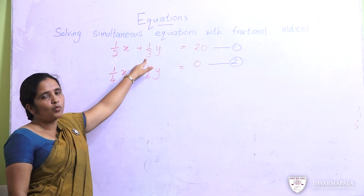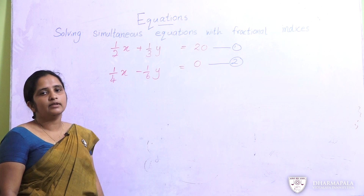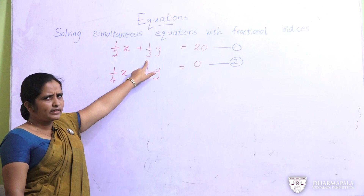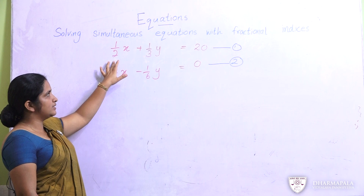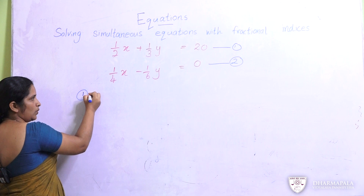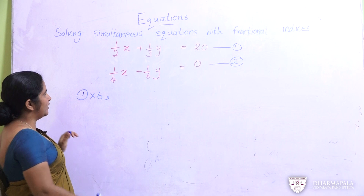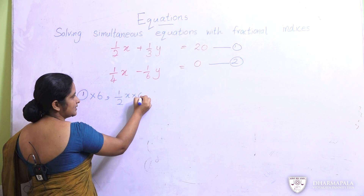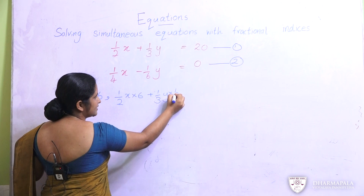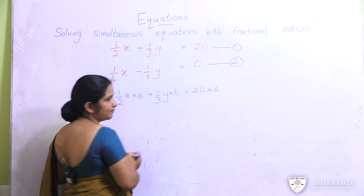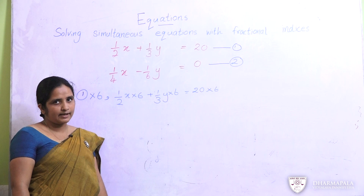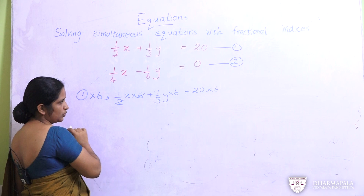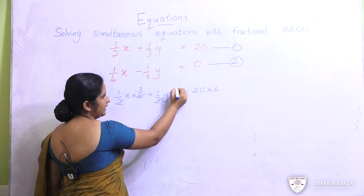When we take 2 and 3, the LCM is 6. So we can multiply the first equation by 6. That gives us: one half x multiplied by 6, plus one third y multiplied by 6, equals 20 multiplied by 6. Each and every term should be multiplied by the LCM. You can divide 2 and 6 by 2 to get 3, and 3 and 6 by 3 to get 2. Then you get 3x plus 2y equals 120.